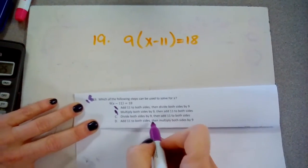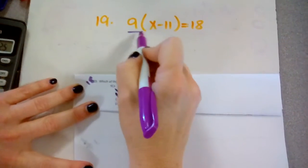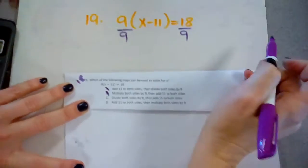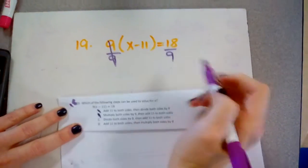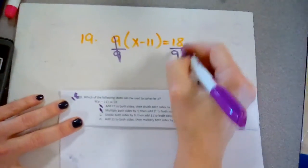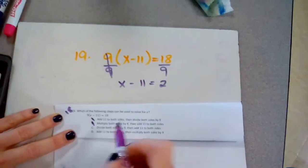Letter C, divide both sides by 9. This is being multiplied here. If I divided both sides by 9, you would see 9 divided by 9 is 1. So those cancel and this becomes a 2, which leaves me with x minus 11.